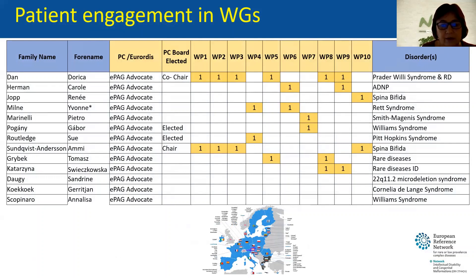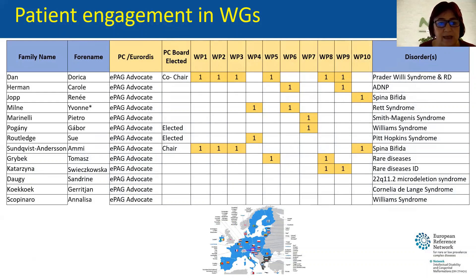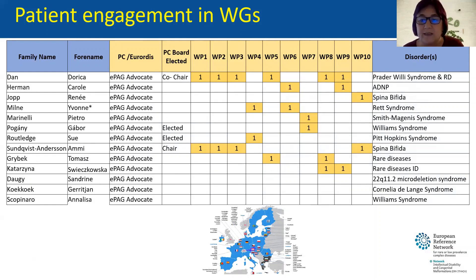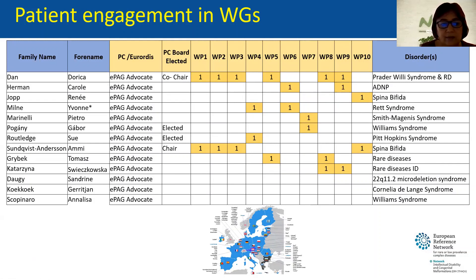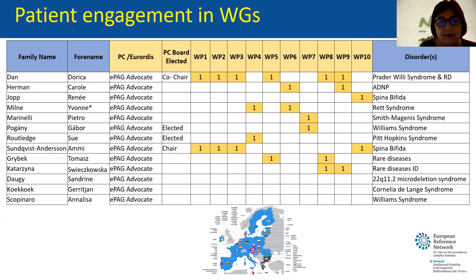Here are the working groups where each of us is involved. Most of us are involved in one, two, or more work packages. Please let us know if you see any mistakes or if you think you are involved in more working groups than mentioned. We still have three ePAGs which are not allocated to any working groups, and maybe they can inform us of their intentions so we can allocate them, because we need all the support you can provide.